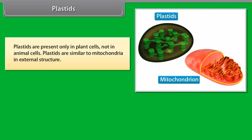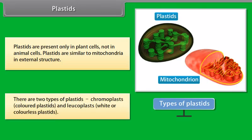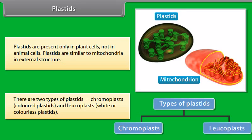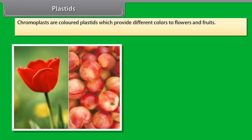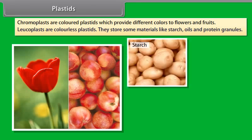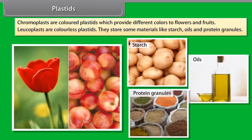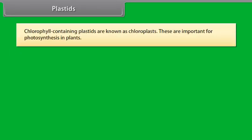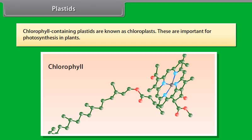Mitochondria are known as the powerhouses of the cell because they generate and provide energy in the form of ATP (adenosine triphosphate) to the cell to perform various chemical activities. ATP is known as the energy currency of the cell. Mitochondria contain two membrane coverings. The outer membrane has many pores on it, while the inner membrane has many folds. These folds are known as cristae.